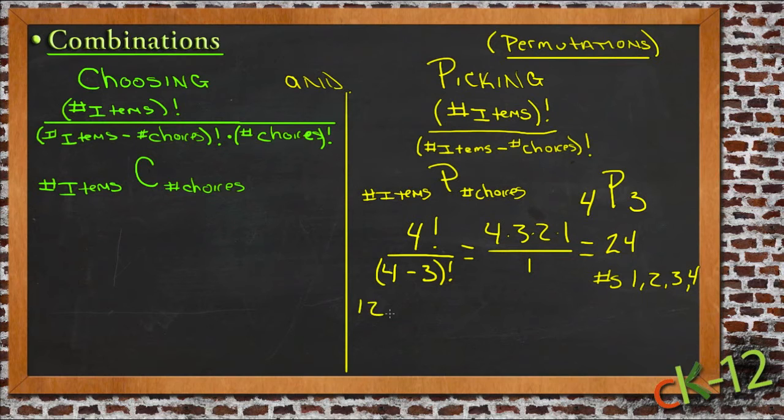3, and 4. Some of our possibilities might be 1, 2, 3, or 2, 3, 4, or 2, 3, 1 - any combination of three numbers chosen between 1, 2, 3, and 4.